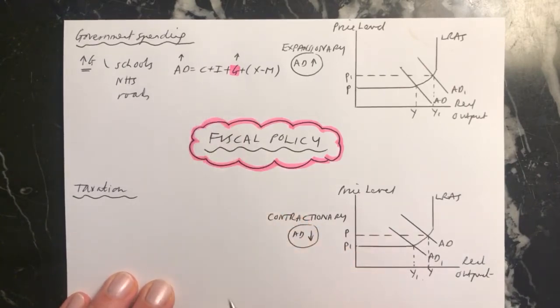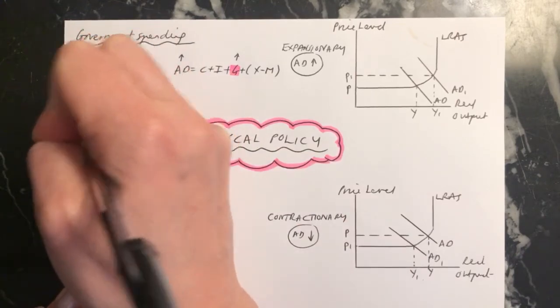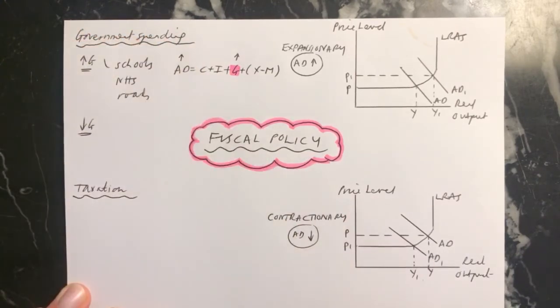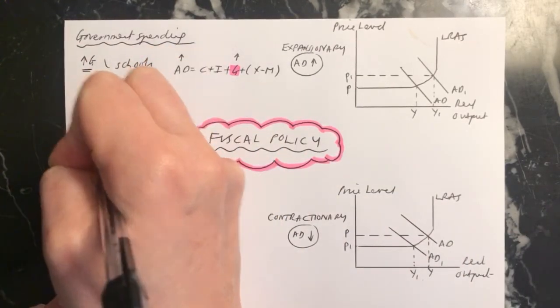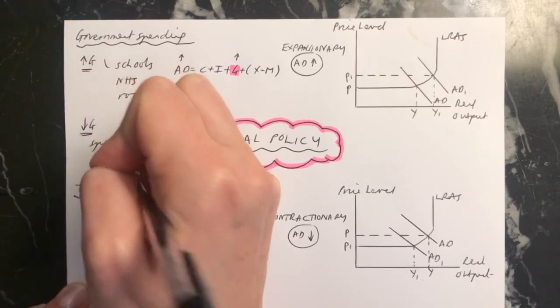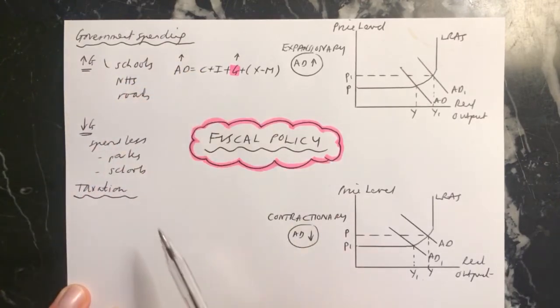if the economy, say, we were seeing too much inflation, they might decide to decrease government spending. And if they decrease government spending, they might decide to spend less on certain things. So, for example, parks or schools or something like that. They reduce their spending,